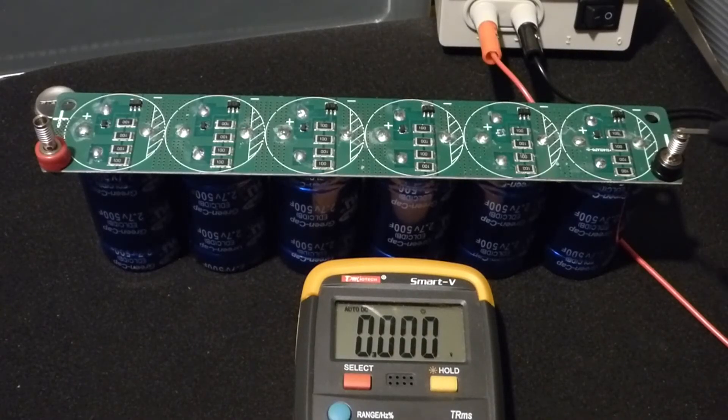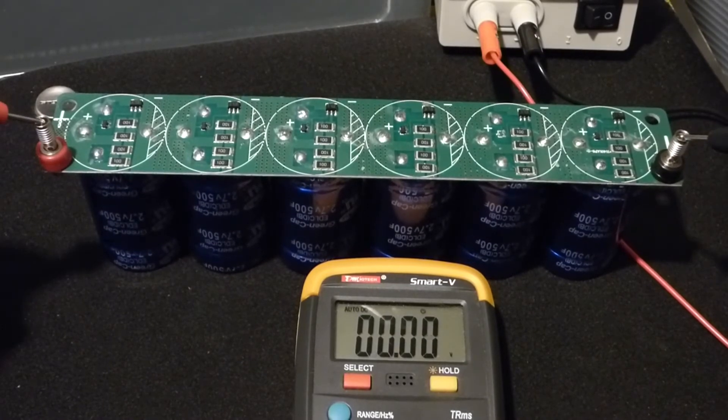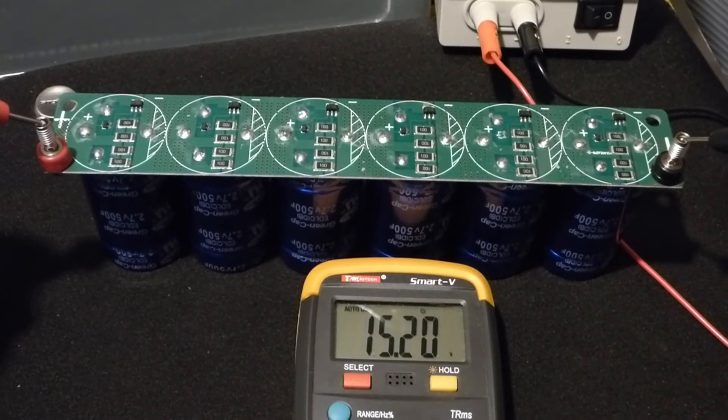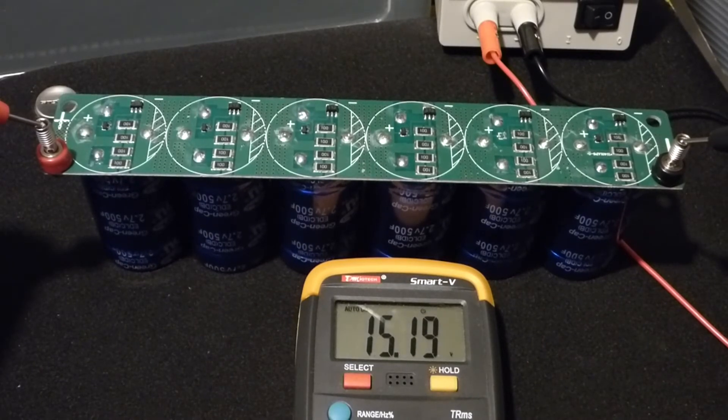Now we'll use the multimeter to get a more accurate voltage reading. You can see it's about 15.2 volts but it's dropping a little bit.